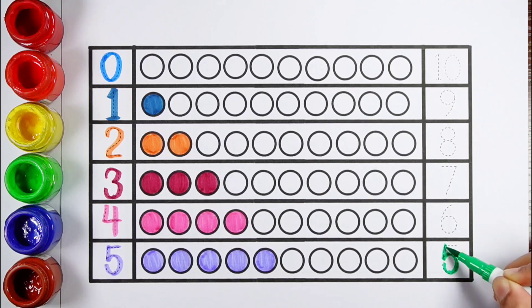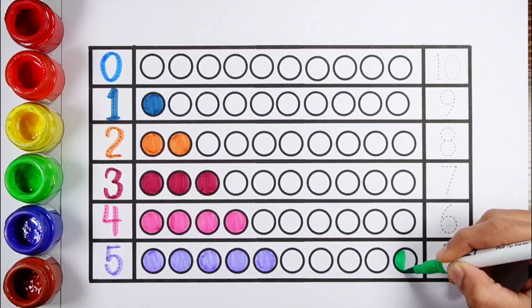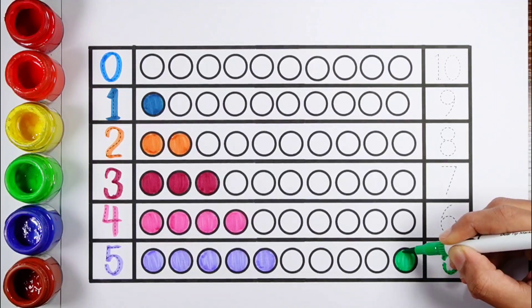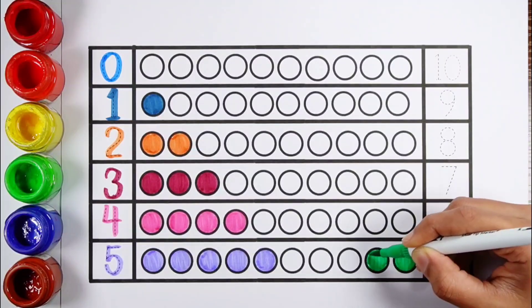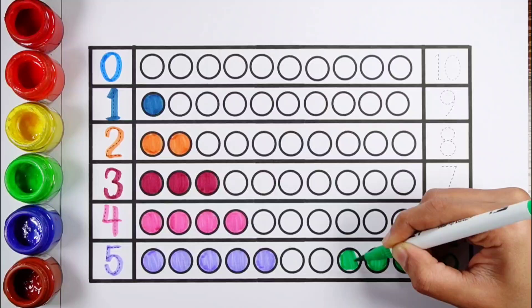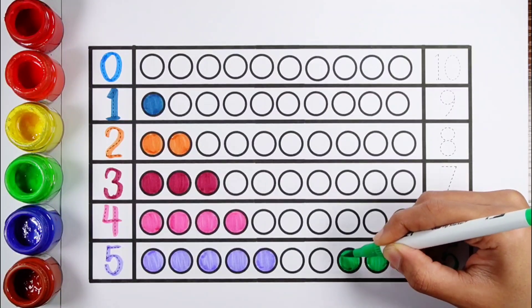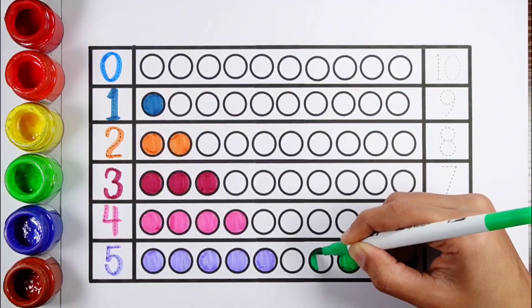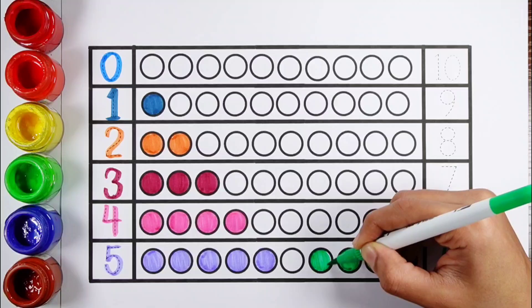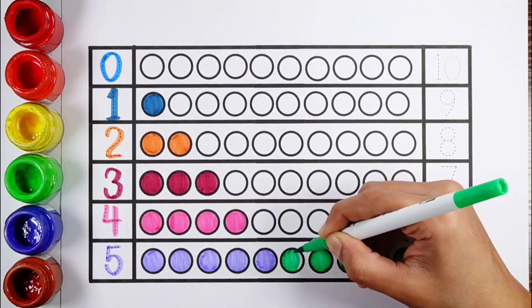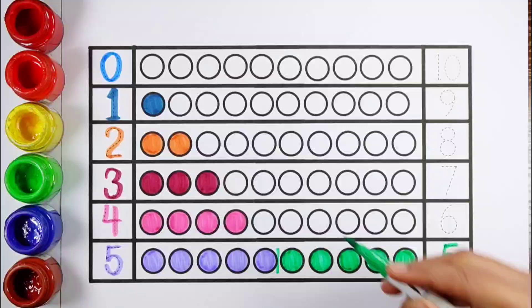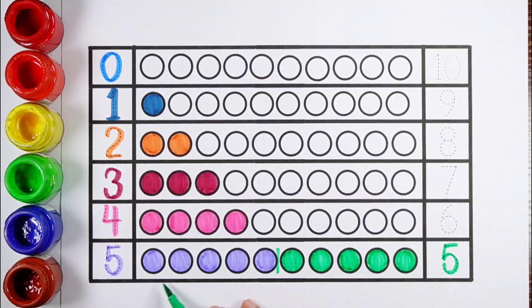Number 5. 1, 2, 3, 4, 5. 5 balls. 5 plus 5 makes 10.